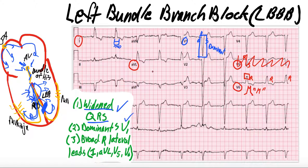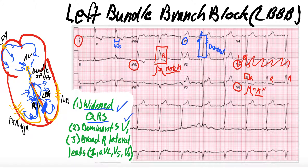In AVL, we have this big broad R wave, and if you look closely it comes up, goes down, and has a little thing that comes up again. We call this just notching — not M notching, but another type of notching pattern we see in left bundle branch blocks. Similarly in lead 1, we see our R wave: P, then Q, then we go up into our R, it comes down, we get a little notch, and then it comes down the rest of the way.